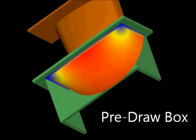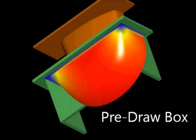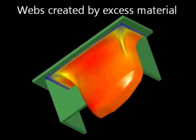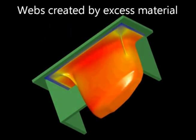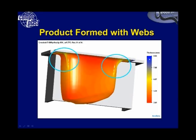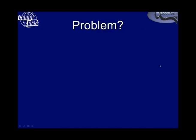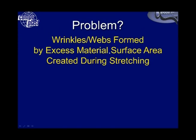As you can see, there are two webs created in these corners. This shows the thickness distribution, and apart from these webs and wrinkles the thickness distribution on the part was relatively good. The problem is wrinkles and webs formed by excess material surface area created during the stretching of the part.